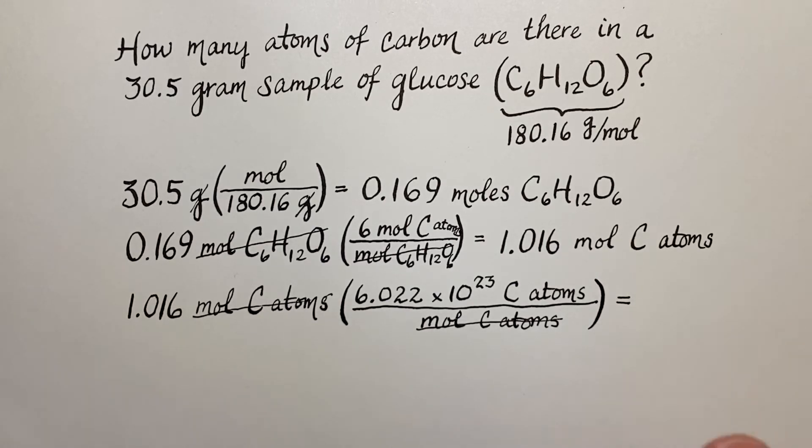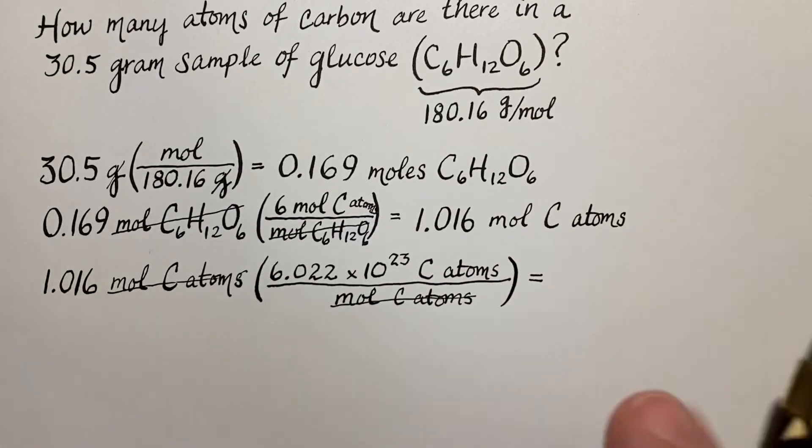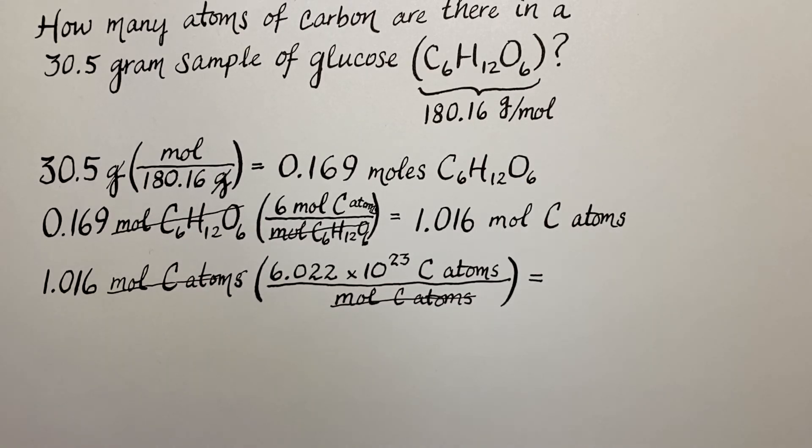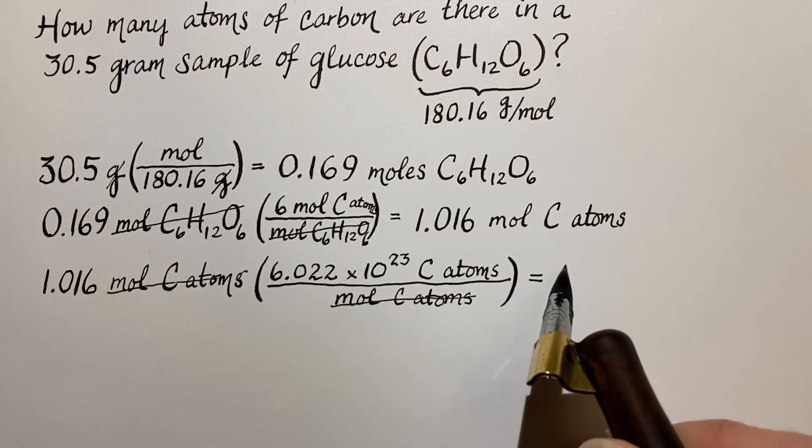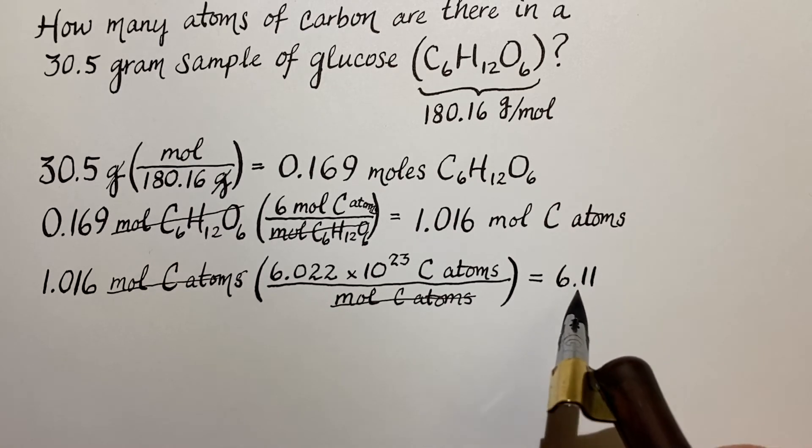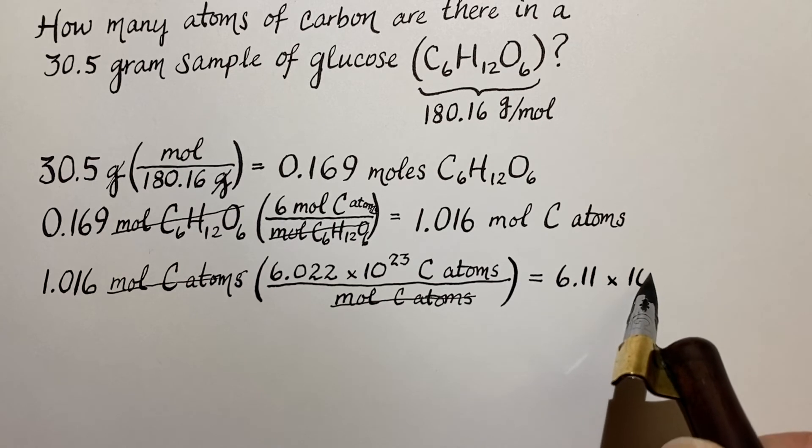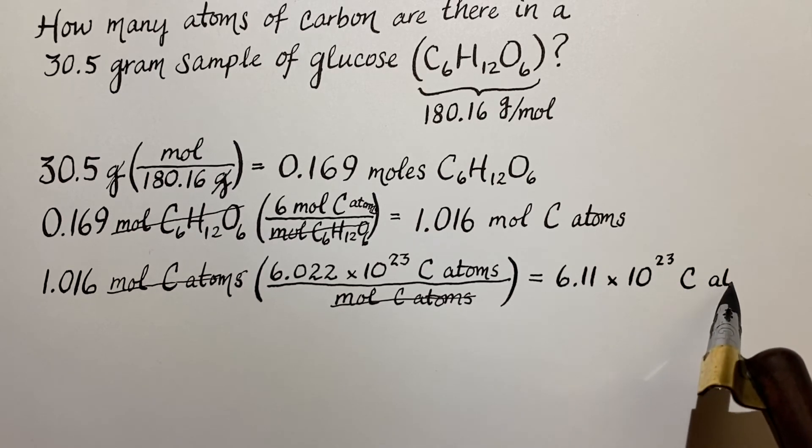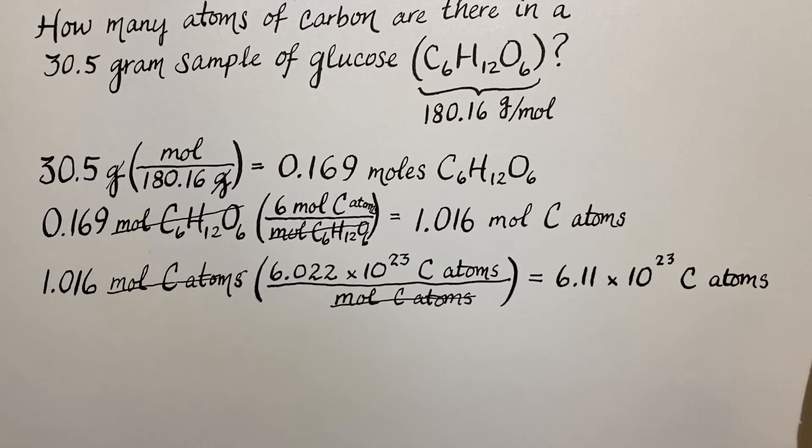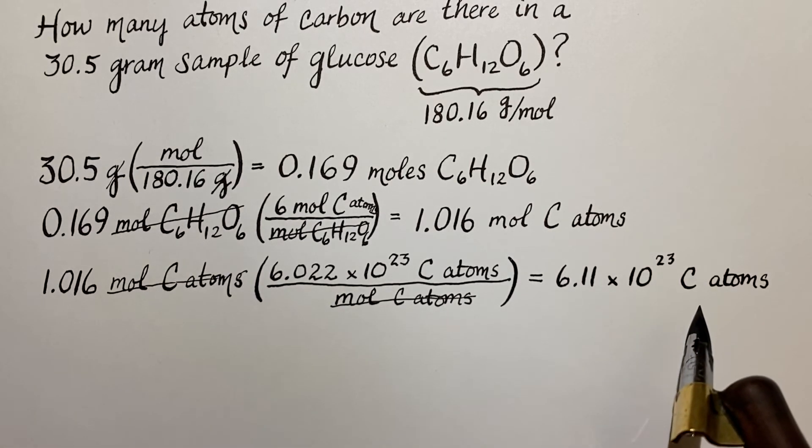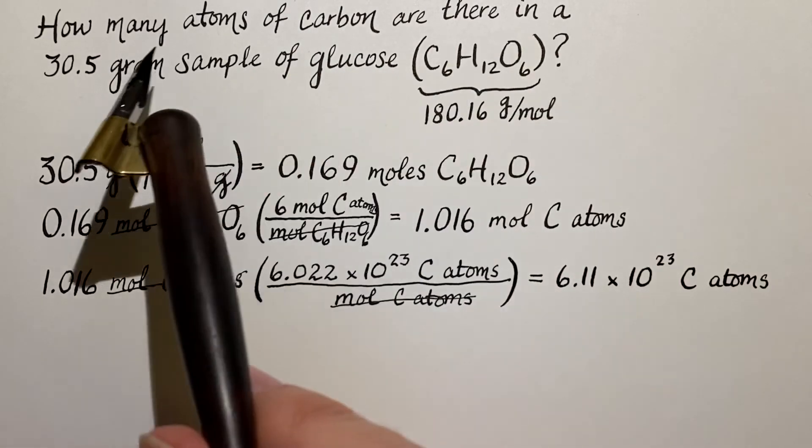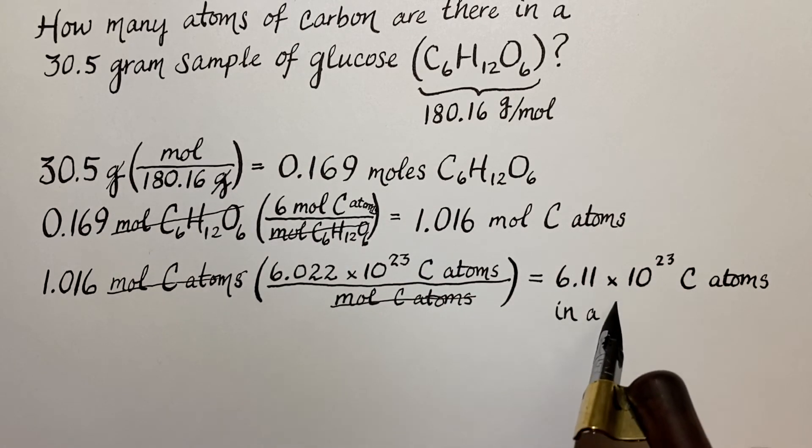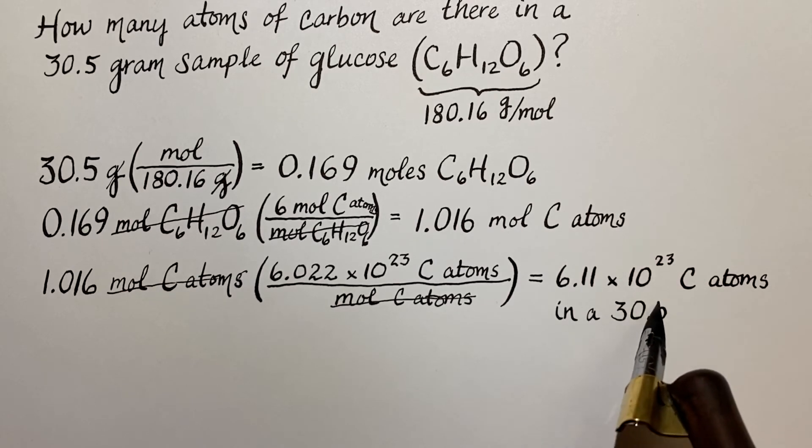In this calculation, we're going to multiply this value times Avogadro's number and we get 6.11 times 10 to the 23rd carbon atoms. And just remembering back to what the question is asking, this is how many of those atoms you would have in that 30.5 gram sample of glucose.